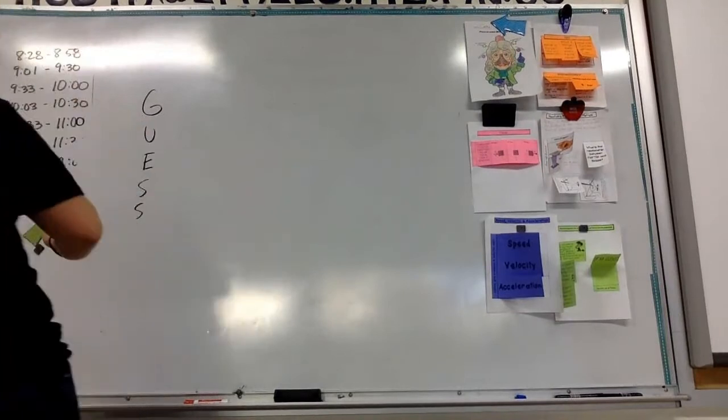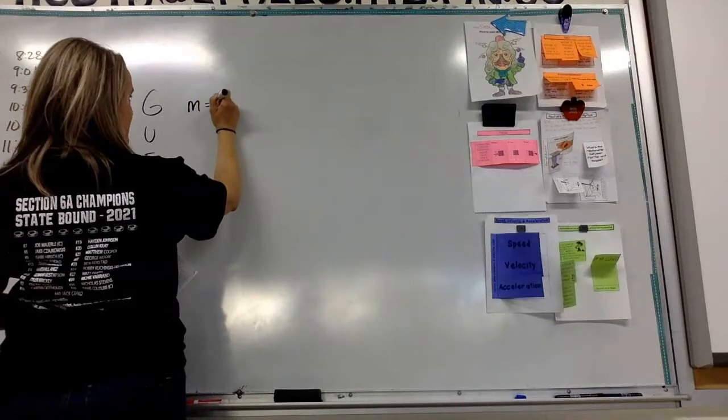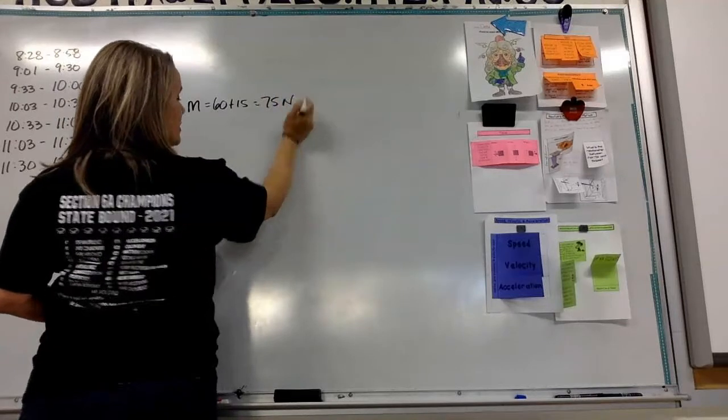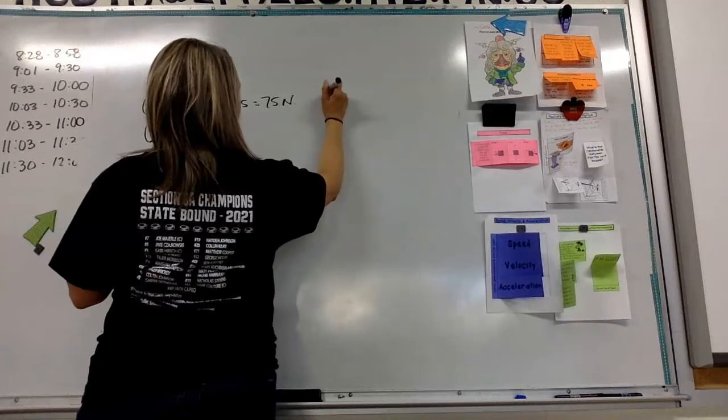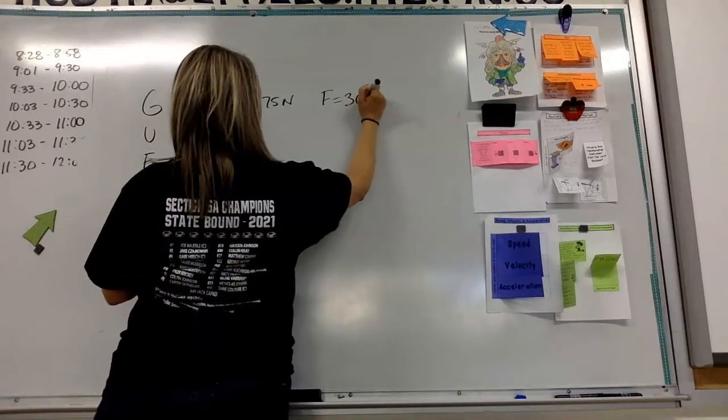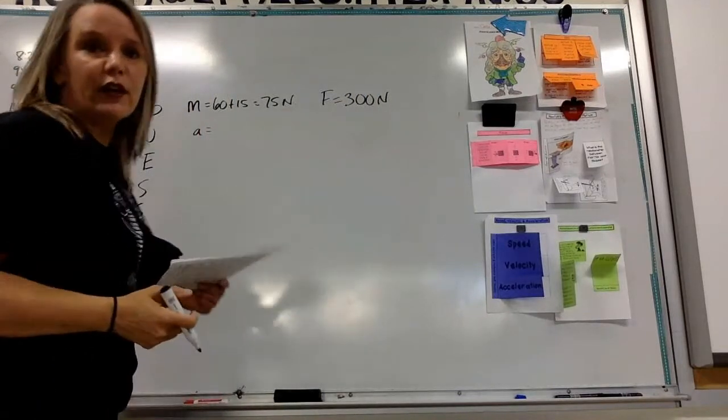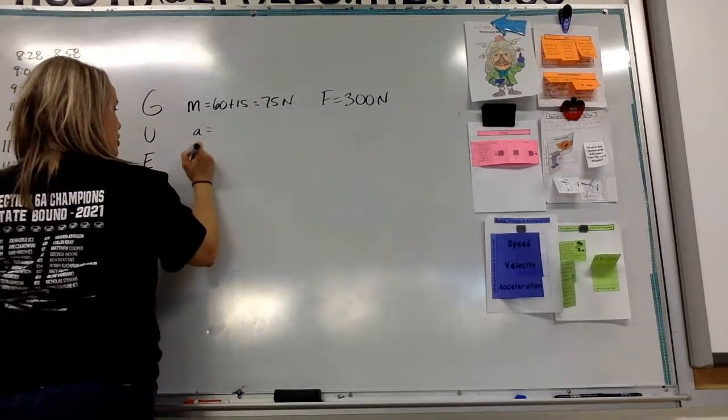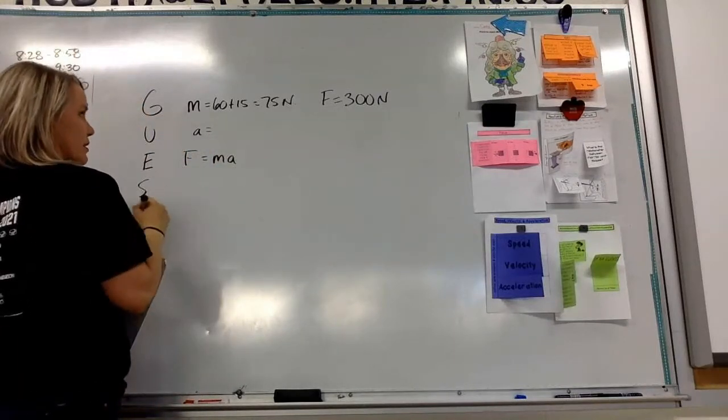So let's set that up on the board like we've done before. Our knowns are mass. Mass equals 60 plus 15, or 75 newtons. And our force, we know that as well. Our force is 300 newtons. Our unknown in this case, what we're trying to figure out, is the acceleration.